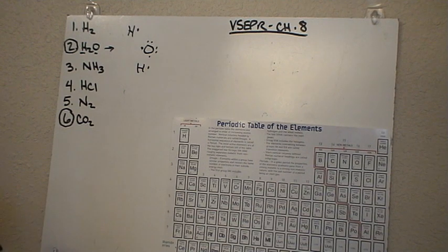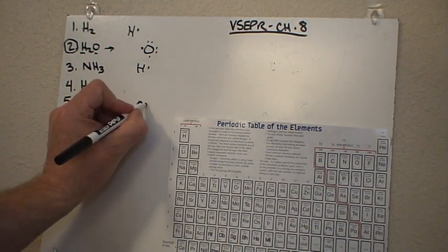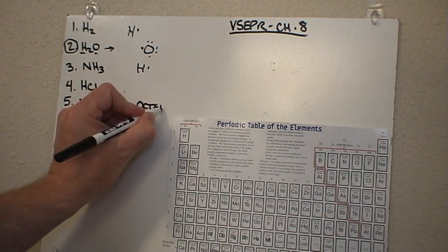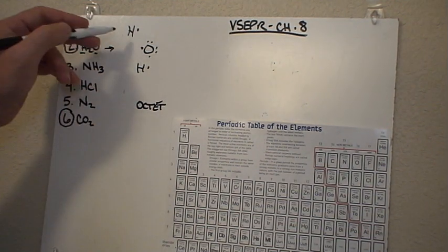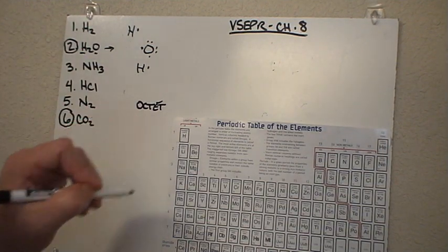What we're going to do is take a look at how we actually get these together to form a compound. Now remember, there is the octet rule, which means that every single element needs to have eight total electrons, with the exception of hydrogen because it's only two spots.